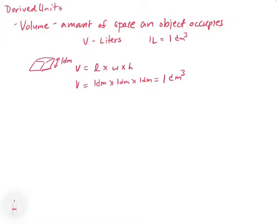One decimeter cubed is the same thing as one liter. So a liter is a decimeter cubed. In all three dimensions, this cube occupies one decimeter; when you multiply those together, you get the volume.